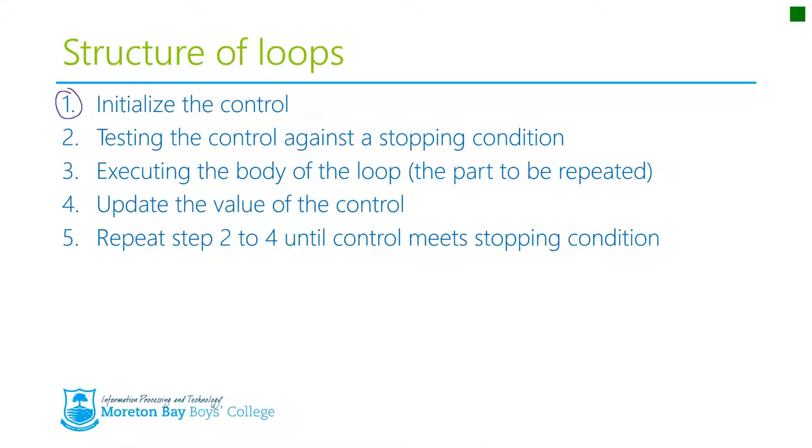Step two: you test that control against a stopping condition. So is this situation meeting the condition? If it hasn't met the stopping condition, then you execute the body of the loop, which is this part here in step three. That's the part that gets repeated over and over again. This can be hundreds of lines or it can be one line. But this is what gets repeated.